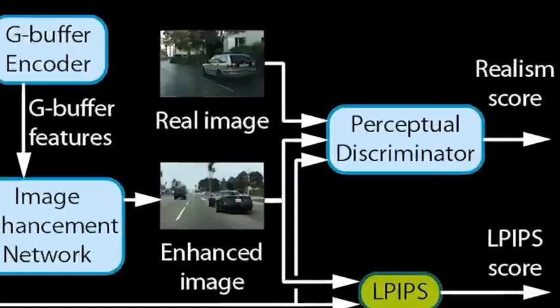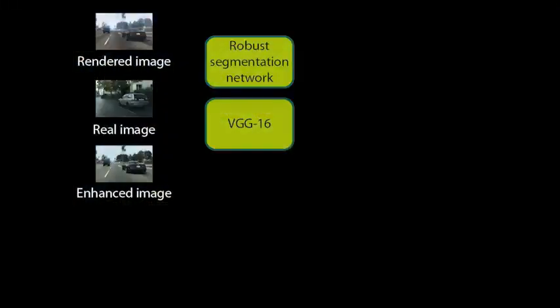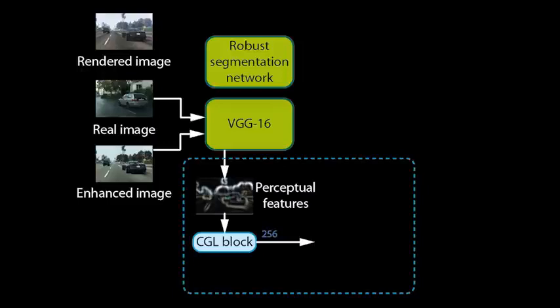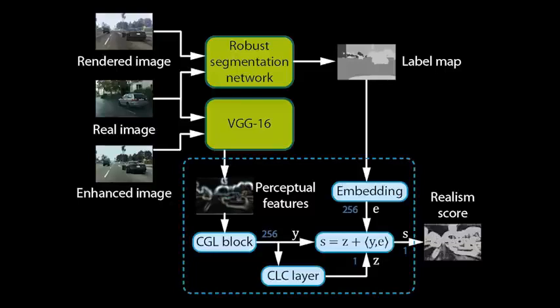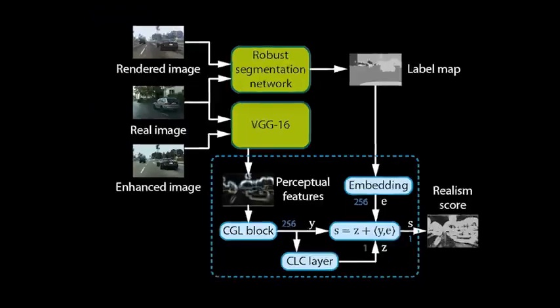The discriminator contains a robust semantic segmentation network and a network for extracting perceptual features — in this case, a VGG-16. We extract features from the VGG at multiple levels and pass them through a convolutional network. This differs from prior work that trains discriminators directly on images; training on VGG features allows our network to quickly learn a model of realism at multiple perceptual levels. We further pass the unmodified rendered image, as well as real images, through the segmentation network to obtain a label map for each. The label map is used to specialize the discriminator on individual object classes. Since we use a pre-trained, robust segmentation network, the object classes are consistent for rendered and real images.